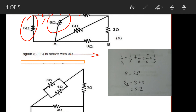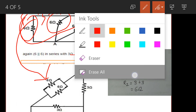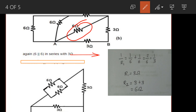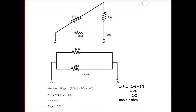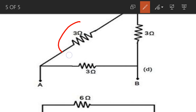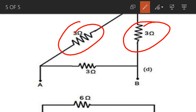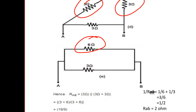The combination of this 6 ohm, this 6 ohm, and this 3 ohm resistor is 6 ohm. This circuit with two 6 ohm resistors and one 3 ohm resistor has a combination of 6 ohm. That 6 ohm combination and this other 6 ohm resistor are in parallel, so we solve the parallel connection and get 3 ohm. This 3 ohm and this 3 ohm are again in series, so 3 plus 3 equals 6 ohm.